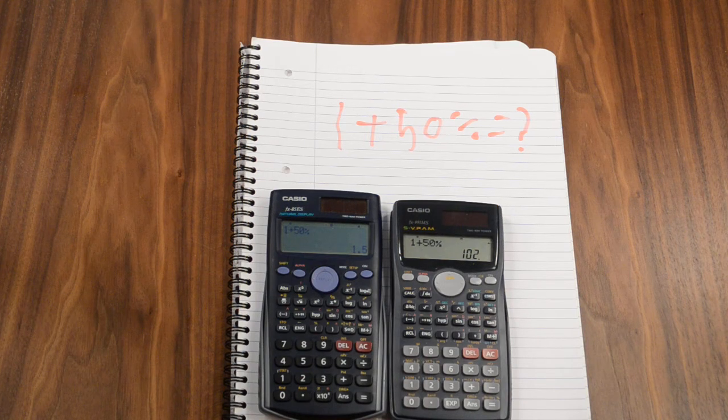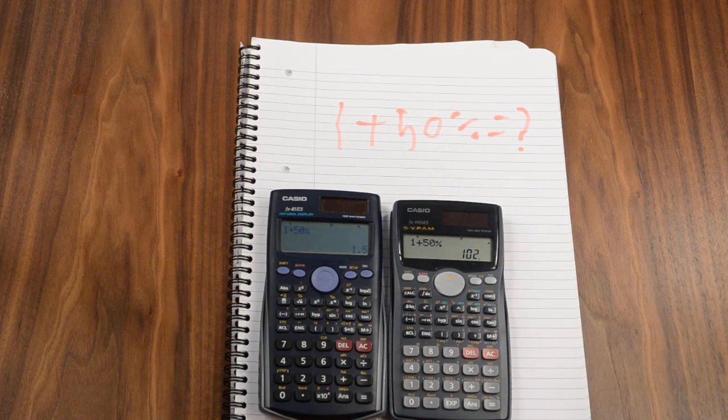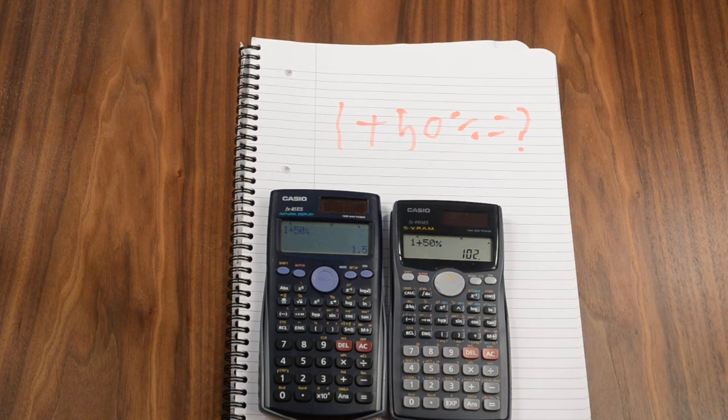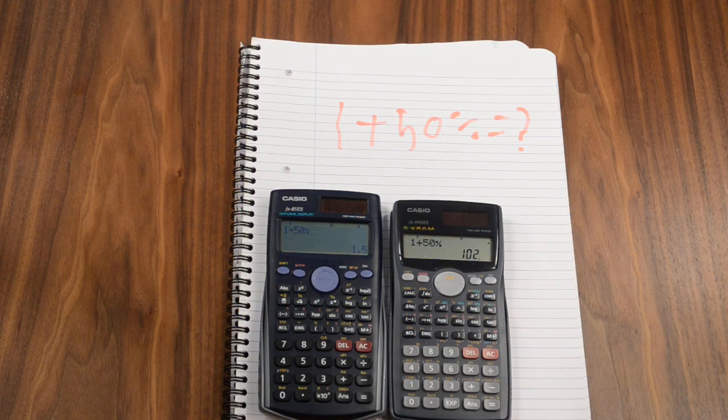It could be said that those who are dependent on the percentage button and can't work them out otherwise, are those who are going to be potentially unable to detect such an error.